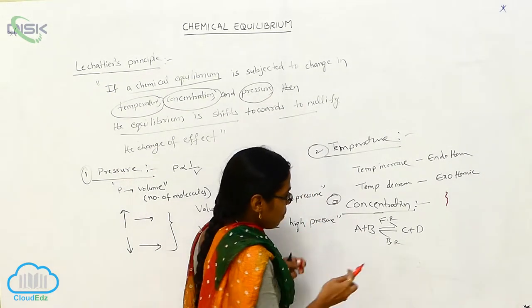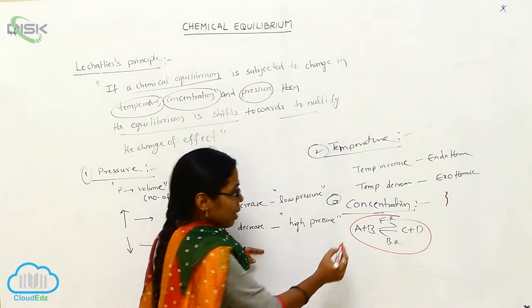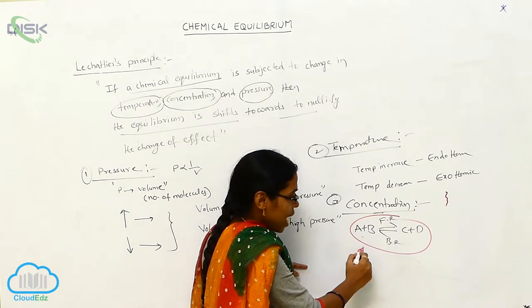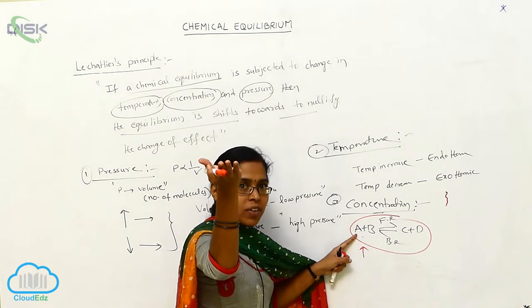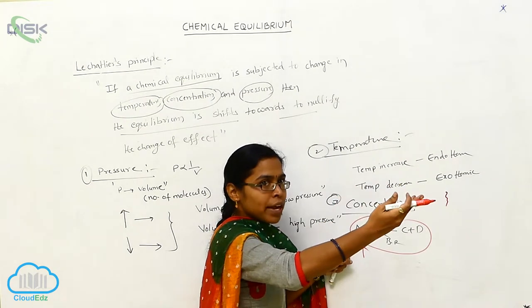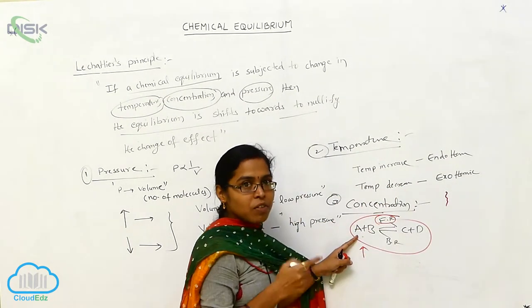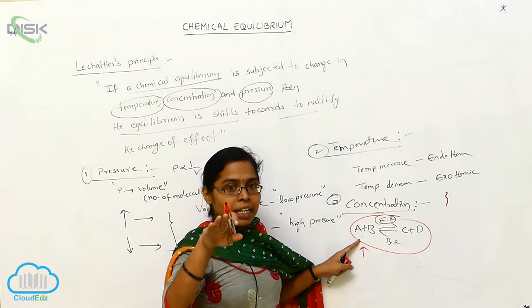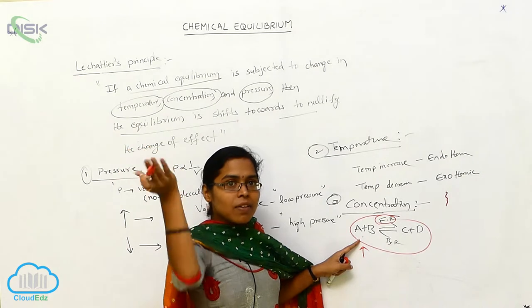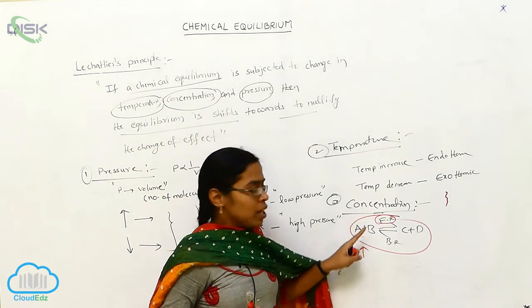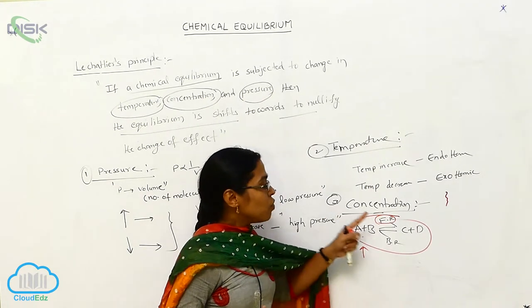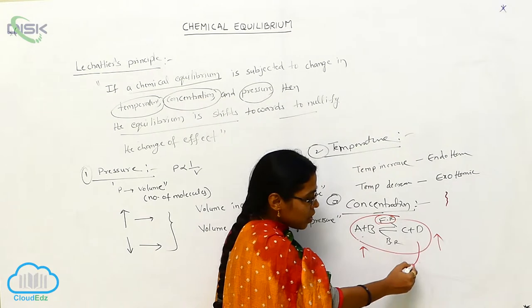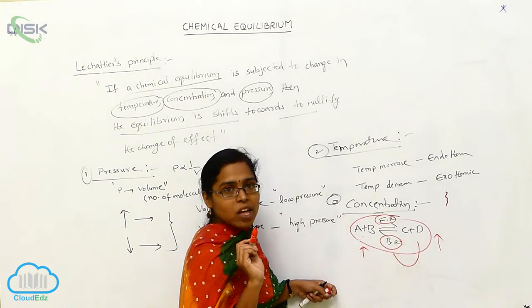For example, A plus B gives C plus D. Here A and B are the reactants and C and D are the products. Whenever the reactant concentration increases, the chemical equilibrium shifts towards the forward reaction. In the forward reaction, reactant concentration decreases and product concentration increases. If the product concentration increases, then the backward reaction takes place.